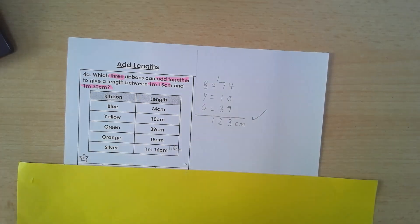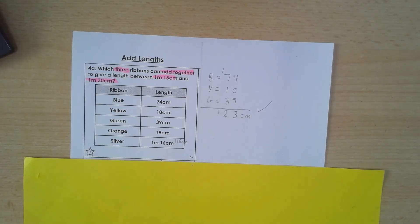That gives me 123 centimetres, which is between that. So I've started there. There might be another one. And you can have a go at some of the different ribbons, if you like, to see if you get the answer.